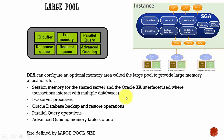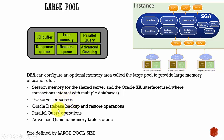What are those operations? The operations like session memory for the shared server and the Oracle XA interface. This Oracle XA interface is used if the transactions have to interact with multiple databases. Another one — if there are a lot of input-output server processes on your database server, then it's better to allocate them large pool. And also, another significant one is Oracle Database Backup and Restore Operations, which require a lot of memory. That is why it is better to allocate large pool for them instead of them using your shared pool.